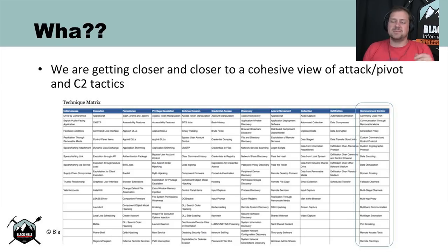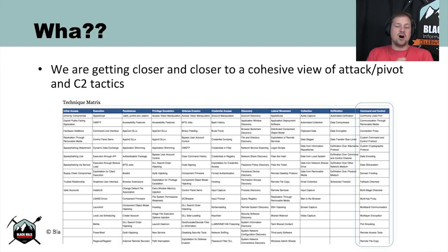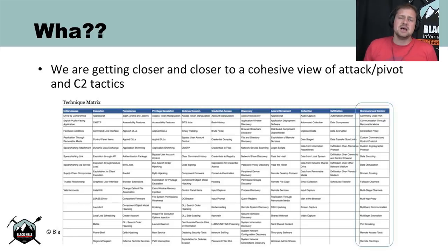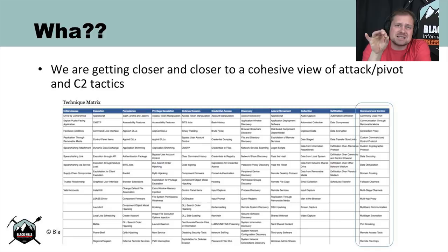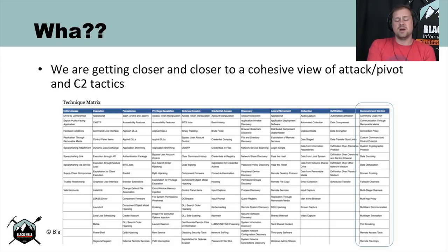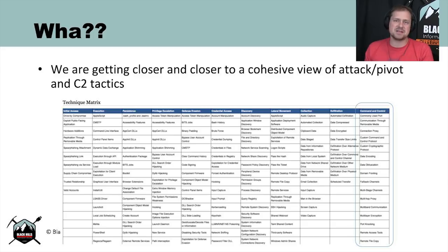Whenever I'm talking with my classes and customers, we're spending more and more time discussing purple teaming. The idea of purple teaming is you have the red team — offensive people — who come in and test and exercise the blue team's ability to detect them. Companies like SpecterOps, TrustedSec, and many others do a great job of consulting and running red team tactics to work with the blue team. But you don't necessarily need a full external third party — you can do a lot of that work on your own.